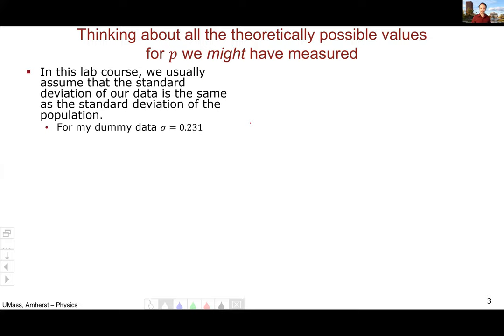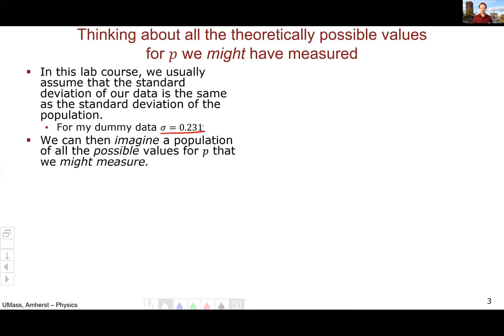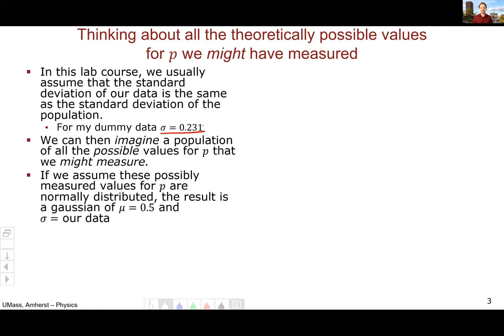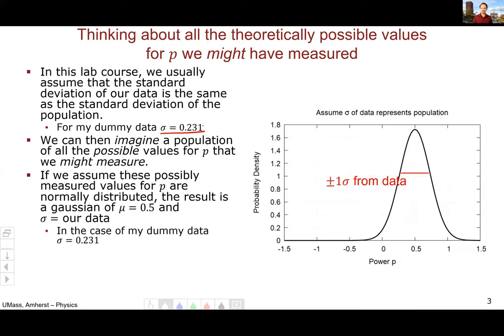In this lab course, we assume the standard deviation of our data is the same as the standard deviation of our population. And in the case of my dummy data, we got a standard deviation of 0.231. So we can imagine a population of all these different possible p values that we might measure. And if we assume that these possible values for p are normally distributed, the result would be a Gaussian with a mean of 0.5 because that's the true value. And then the standard deviation equal to the standard deviation of our data, whatever we happen to measure it to be.